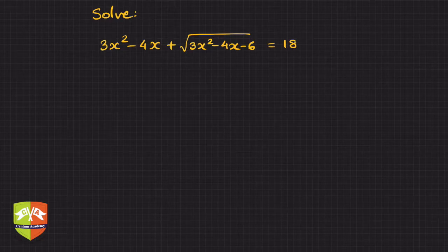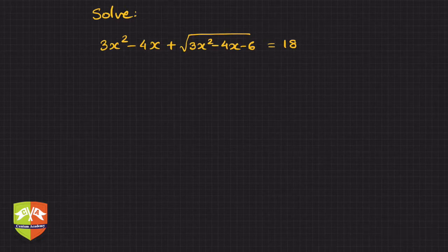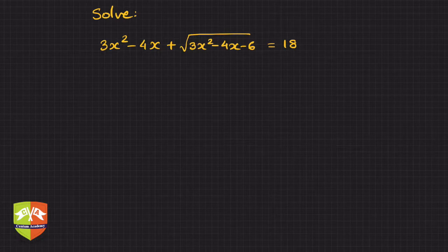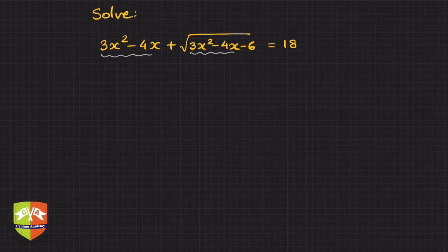Here we have an ugly-looking equation in front of us — quite a big task to solve. But we have tools at our disposal, and the most important one is knowing how to solve a quadratic equation. Does this equation look like we can use that? It does, because if you notice, there is a pattern — something hidden. Mathematics is all about observation, and there is some trend being observed here that we can exploit.